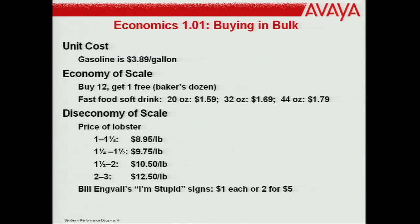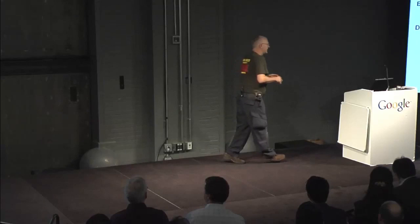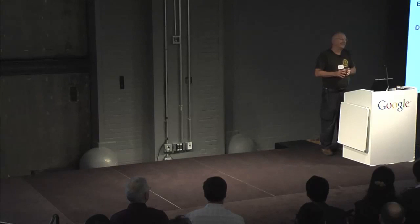Other examples of diseconomies of scale: computer power — getting that last little bit costs a whole lot more. In search and rescue: if a team of 40 people can search after two hours, and you wait to four hours, how big will your team have to be? It won't be twice as much — it'll be four times as much. There's a diseconomy of scale.